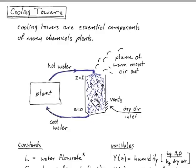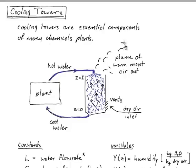The water drips down through the column while a dry air stream runs counter-current, flowing upward and gradually becoming warmer and wetter as it rises. The hot water becomes cooler and cooler because it supplies the heat of vaporization that goes into the plume exiting the top. In this lesson we're going to quantify how much water can be cooled using this device.